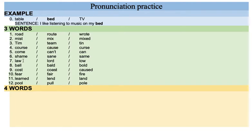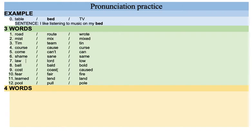Number seven: law, lord, low. Careful with the first one — law. It's not low. Low is this one, and this one is low. Number eight: ball, bold, bold. Repeat: ball, bold, bold. Number nine: cost, coast, cost. The difference here is coast versus cost.